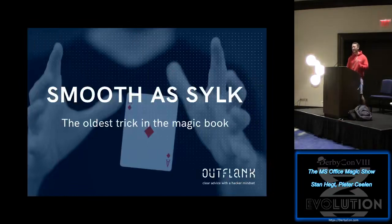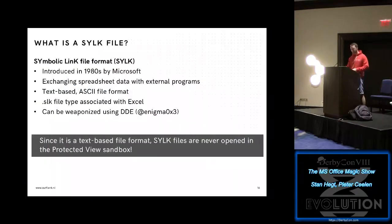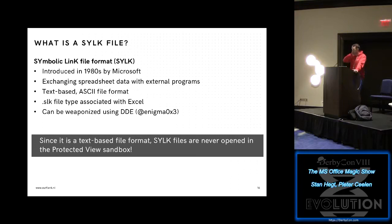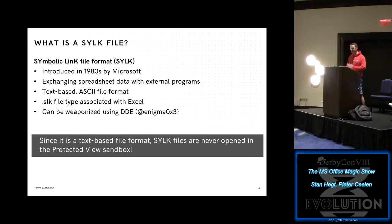So, what happened here? Let's start with what a SYLK file is. SYLK stands for Symbolic Link. It's a file format developed by Microsoft in the 1980s — around 1984, which makes it exactly as old as I am. It was introduced for exchanging spreadsheet data with programs other than Excel. It's a completely text-based ASCII file format — there's nothing binary in there. The .slk extension is associated with Excel by default, up to and including the latest Office 2016 versions.